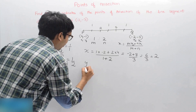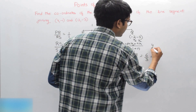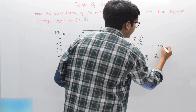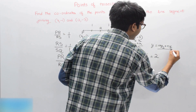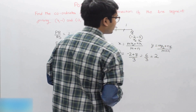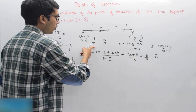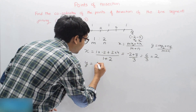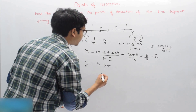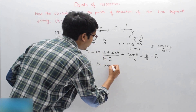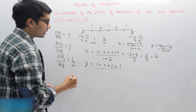Next, for the y-coordinate: y = (M·y₂ + N·y₁) / (M + N), which is (1 × (-3) + 2 × (-1)) / 3.